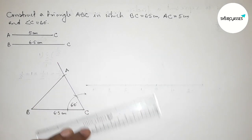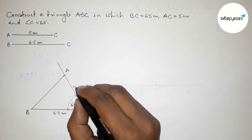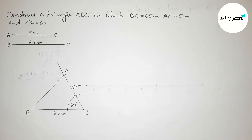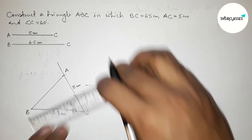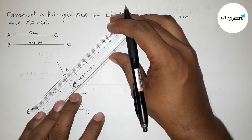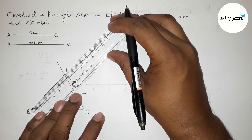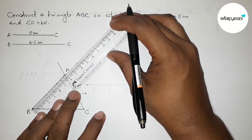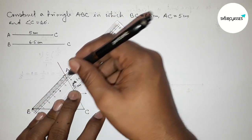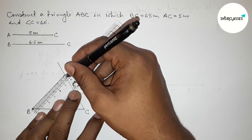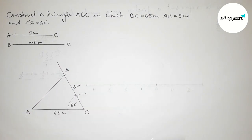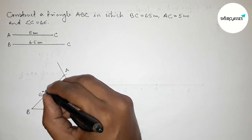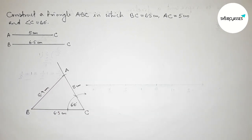Now joining side AB to complete triangle ABC. AC equals 5 centimeter is confirmed. Measuring the length of AB with the help of a scale — AB is approximately 5.9 centimeter.